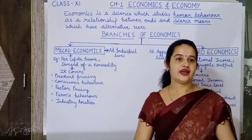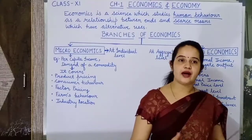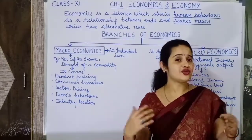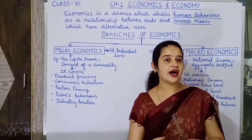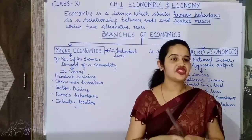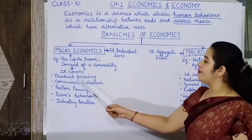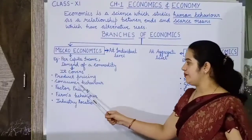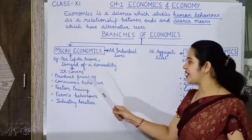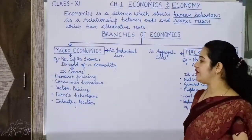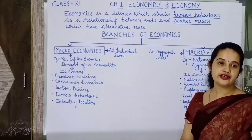Microeconomics covers product pricing, consumer behavior, factor pricing, firm behavior, and industry location. Now let's move forward to the second concept, that is macroeconomics.